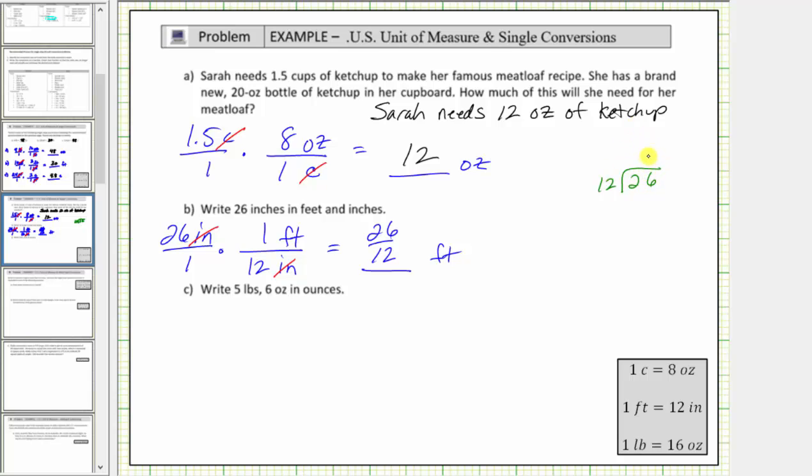Well there are two twelves in 26, 2 times 12 is 24. We subtract, the difference is 2, which means 26 inches is equal to 2 feet, 2 inches.